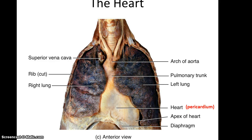Here's another picture of a heart in a cadaver with the thoracic cavity opened up. If you just take off the top of the thoracic cavity, you don't see the heart itself. What you're looking at is the pericardium — the rough, fibrous connective tissue that surrounds the heart to help protect it.